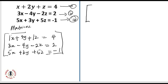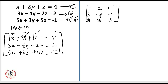For the first row, I'll pick 1, 2, and 1. Then 1, 2, 5. For the second row, I'll pick 3, minus 4, and minus 2. On the third row, I'll pick 5, 3, and 5. That's my first major matrix.